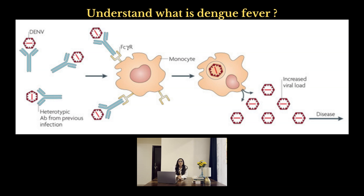First, let's understand what is dengue fever. Dengue is a viral infection caused by the dengue virus DENV, transmitted to humans through the bite of infected mosquitoes. Dengue is found in tropical and subtropical climates worldwide, mostly in urban and semi-urban areas. There are four serotypes of dengue viruses, designated as DENV1, DENV2, DENV3, and DENV4.